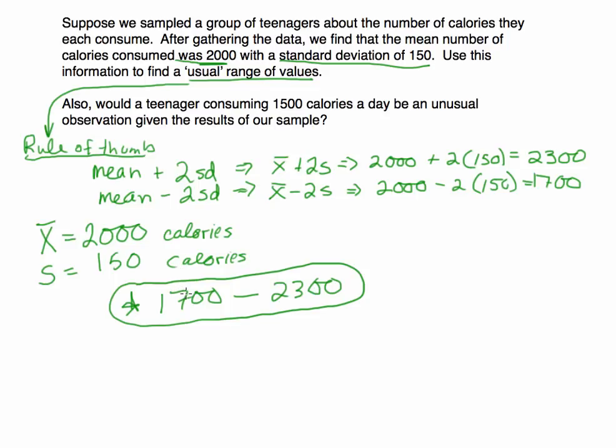If you're asked to determine if a value is unusual, you're first going to need to find this usual range, and then you're going to determine whether or not that observation is in here. So would a teenager consuming 1,500 calories a day be an unusual observation, given the results of our sample? Well, given the sample mean that we got was 2,000 with a sample standard deviation of 150, our usual range was 1,700 to 2,300.